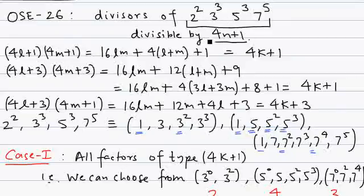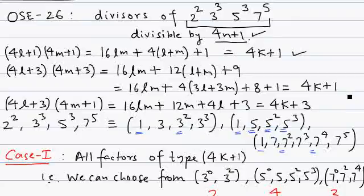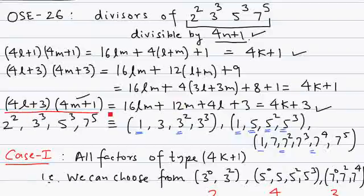Before choosing numbers, we need to understand: if you multiply numbers which are multiples of 4k plus 1, their product is also a multiple of 4k plus 1. If you multiply two divisors which are multiples of 4k plus 3, their product is also 4k plus 1. But if you choose one number of type 4k plus 1 and another of type 4k plus 3, their product is 4k plus 3 — which we want to avoid.